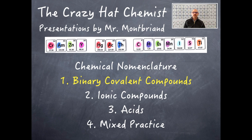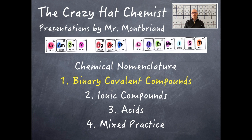Hello, welcome. I'm the Crazy Hat Chemist, I'm Mr. Maupriand, and today we're going to be talking about chemical nomenclature. This is the first video in a series of four. This first video we're going to be talking about binary covalent compounds. The second video we'll be talking about ionic compounds, the third about acid nomenclature, and the fourth will be a mixture of binary ionic and acid nomenclature all mixed up — that's why we call it mixed practice. So let's begin today with chemical nomenclature of binary covalent compounds.